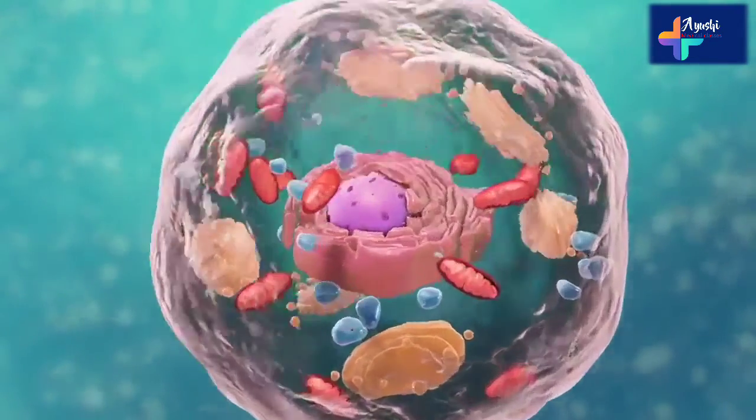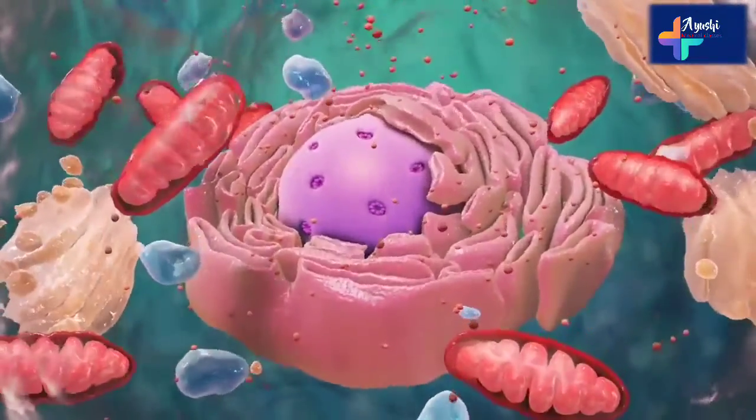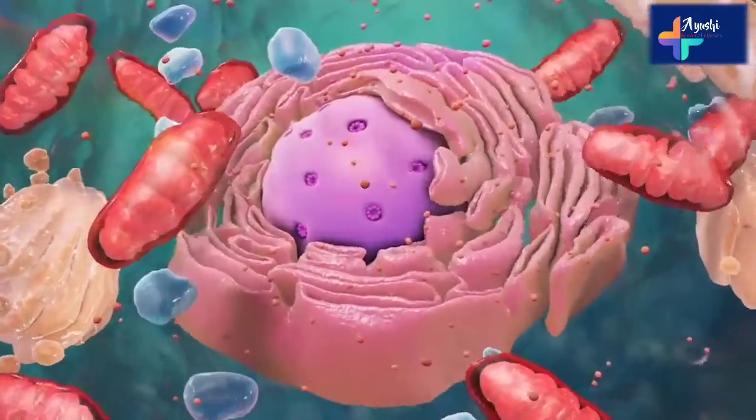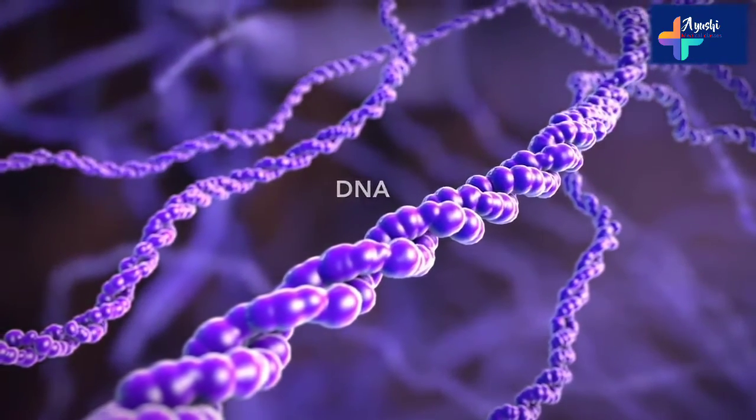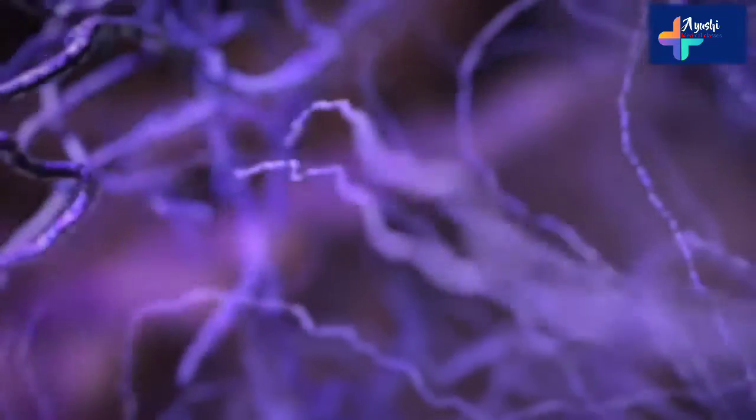Let's start with the nucleus, the control center of the cell. The nucleus contains DNA or genetic material. DNA dictates what the cell is going to do and how it's going to do it.